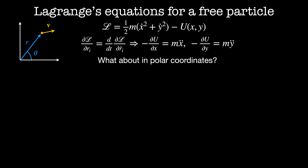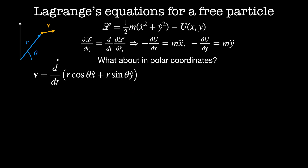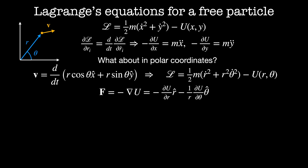What if we wanted to solve this in polar coordinates? The velocity is the time derivative of the position vector in polar coordinates: r cosine theta in the x direction plus r sine theta in the y direction. The kinetic energy then becomes one half m times (r dot squared plus r squared theta dot squared), so the Lagrangian is one half m (r dot squared plus r squared theta dot squared) minus the potential energy as a function of r and theta. Before working out the Euler-Lagrange equations, the gradient in polar coordinates gives us: minus dU by dr in the r-hat direction minus (1/r) dU by dθ in the theta-hat direction.